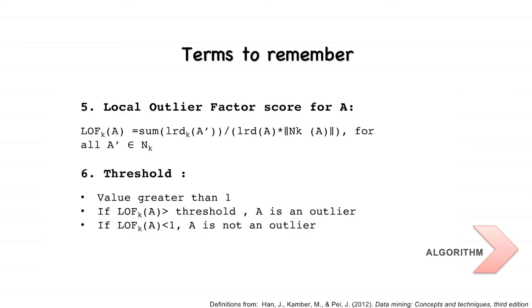Local Outlier Factor score for A, or simply the Local Outlier Factor for A, is the average of the local reachability distance values of all the neighbors of A divided by the local reachability distance of A. If the Local Outlier Factor score for a point A is less than one, it implies that A is not an outlier. However, if the Local Outlier Factor score is greater than one, it implies that the point A is an outlier.